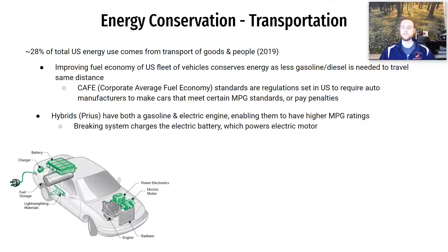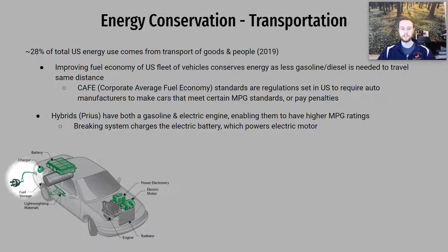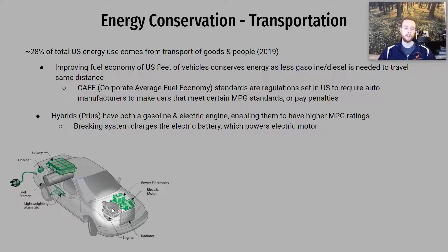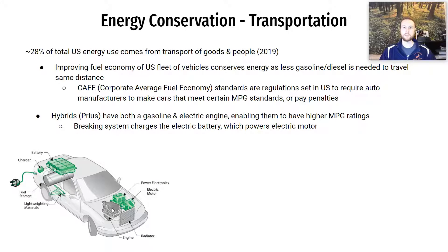Another option is hybrid vehicles — the Prius is a great example. A hybrid vehicle has both a gasoline engine and an electric motor. The braking system of the Prius actually charges an electric battery. Some can be plugged in to charge the battery, which then supplies energy to the electric motor to assist the gasoline engine, allowing it to travel farther on less gasoline. More commonly, the braking system itself charges the battery, so you don't have to plug it in at all — which is really neat.